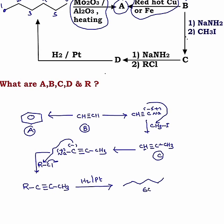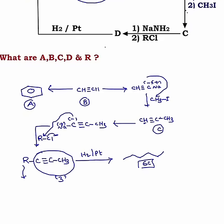So, totally it has 6 carbon atoms. But here, 1, 2, 3 carbon atoms are present. Here, 3 carbon atoms are present. R should contain 3 carbon atoms. Therefore, here R must be. So, here that is a propyl group.